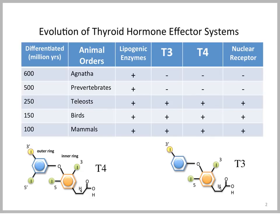It's interesting for comparative biologists such as veterinarians to note that thyroid hormone has been around a long time in evolutionary development. It basically goes back to the teleost, where we've seen T3 and T4, the nuclear receptor, and lipogenic enzymes. From teleost onward, for 250 million years, thyroid hormone signaling pathways have been present in animals.